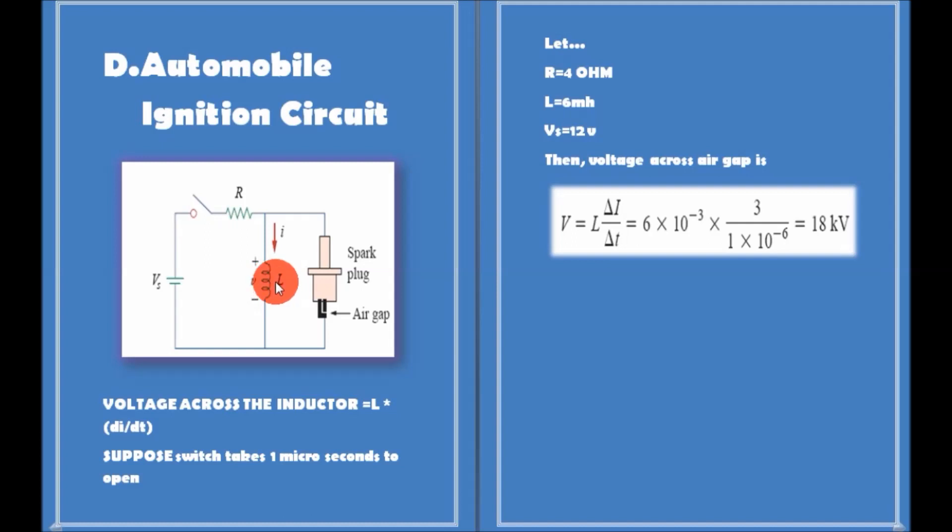Since the voltage across the inductor is given by the expression V = L × di/dt, we can make di/dt very large by creating a large change in current in a very short time.